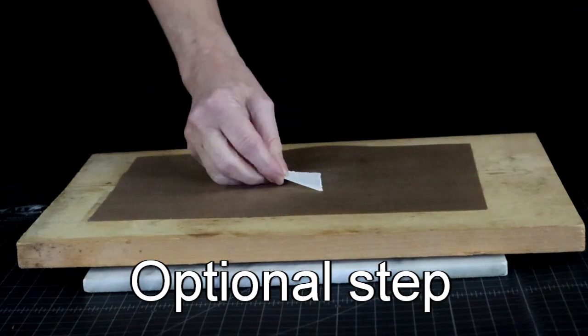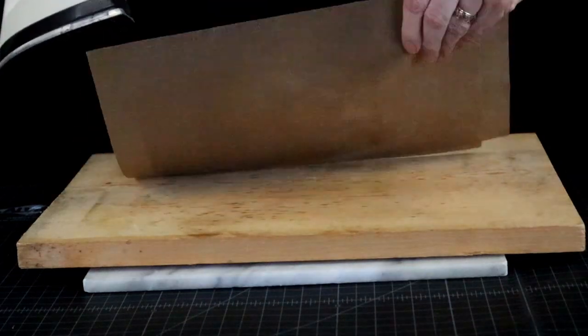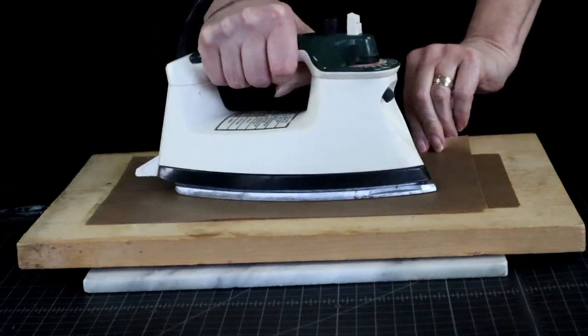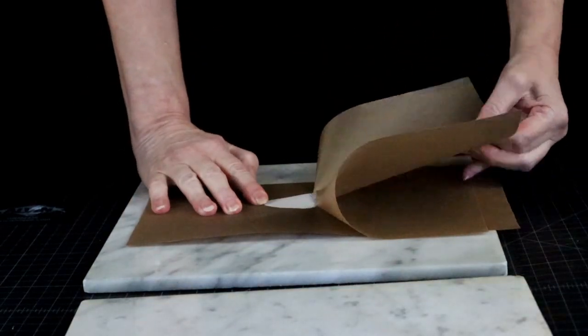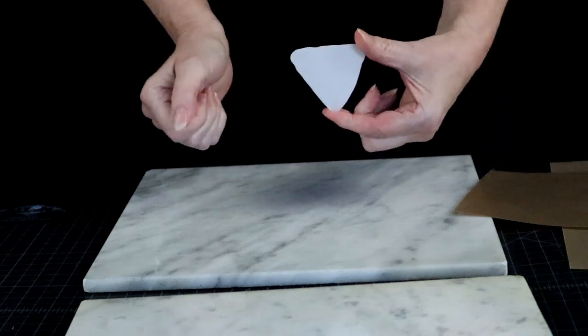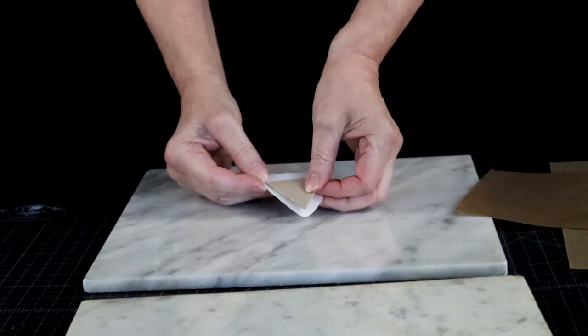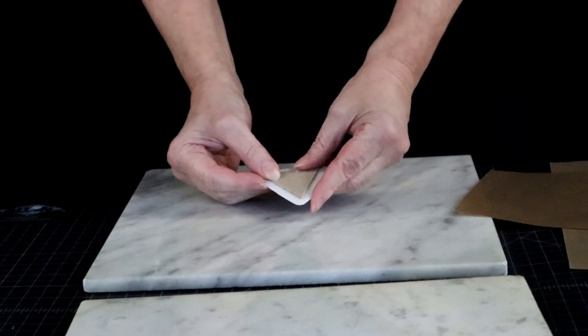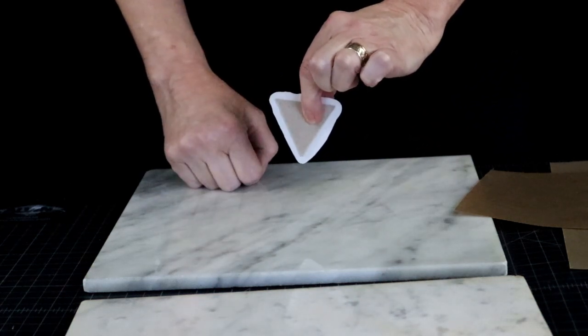Alternatively, you can also optionally iron the pieces between two teflon sheets to get a perfectly smooth surface without any layer lines on both sides of your triangle, which will save sanding time later. The shapes tend to spread out a little during the ironing process, so they will need a trim.